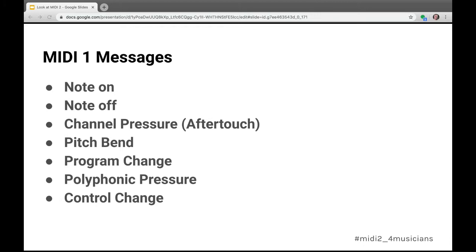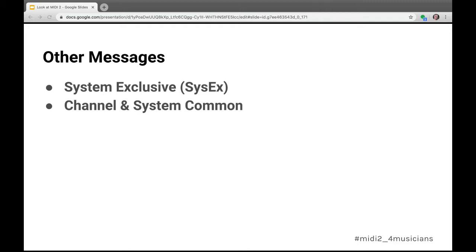These seven MIDI messages were defined in 1983: note on, note off, channel pressure after notes are playing, pitch bend (all notes on that channel receive the same bend data), program change, polyphonic pressure (which allows different pressure per key but ended up not being widely used), and control change — covering anything from sustain pedal to filter cutoff. There are also system exclusive messages for patch editors, and channel and system common messages for other applications.